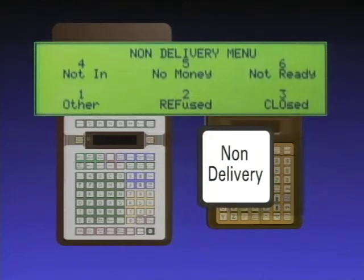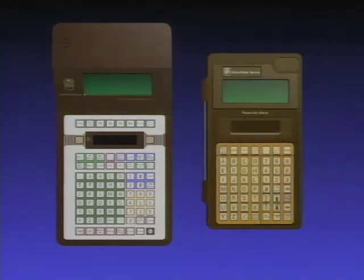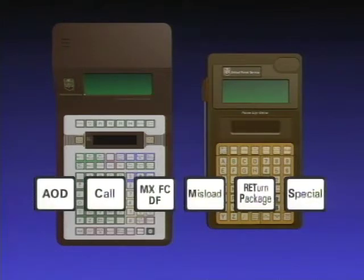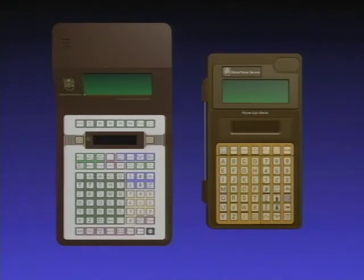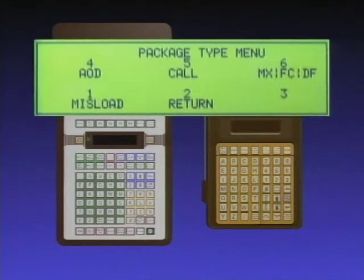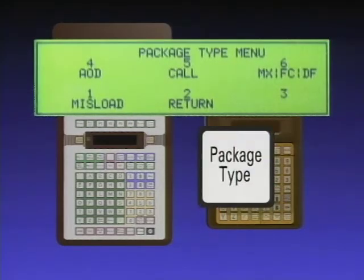The non-delivery menu is brought up by pressing the non-delivery key. You simply select the appropriate number from the menu. Dyad 1's six package type keys have also been eliminated — they're replaced by a package type menu on Dyad 2. Pressing Dyad 2's package type key brings up the package type menu. Once again, you select the appropriate number.